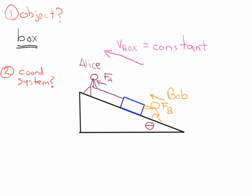Now we've chosen to do the free body diagram for the box itself, so the next thing is to figure out a coordinate system. We can see that a lot of the forces are going to be acting parallel to the hill or perpendicular to the hill. So a logical choice of coordinate system is one where the x-axis is parallel to the hill, and the y-axis is perpendicular to the hill.